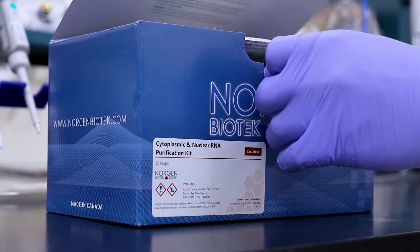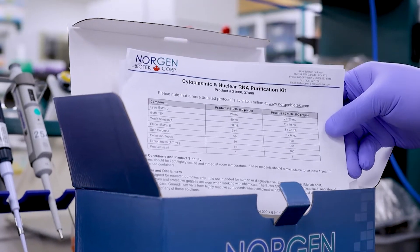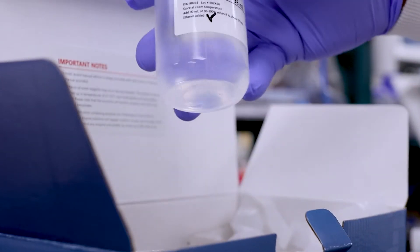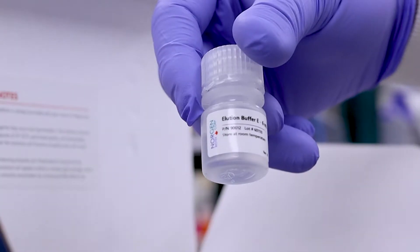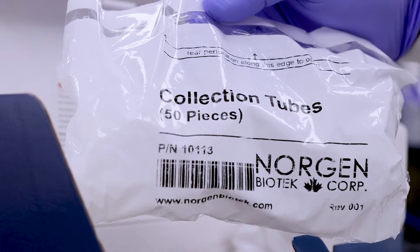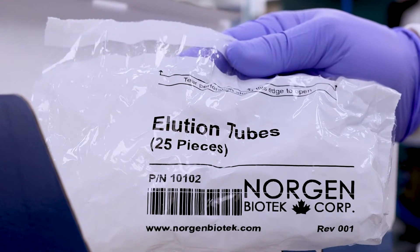Your kit includes a detailed product insert, Lysis Buffer J, Buffer SK, Wash Solution A, Elution Buffer E, Spin Columns, Collection Tubes, and 1.7ml Elution Tubes.